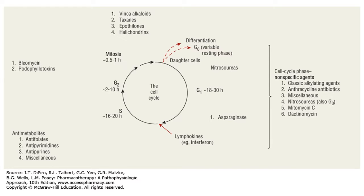Go back and review the cell cycle once we cover the different drug classes to see where these drugs are working — this is really important because you can only time certain drugs when cells are in a particular growth fraction. When a tumor gets large enough, growth kind of plateaus because you outstrip the nutrient supply. But if you surgically remove that tumor and leave a few cells behind, the growth fraction goes up significantly because those remaining cells have less competition and enter rapid replication.